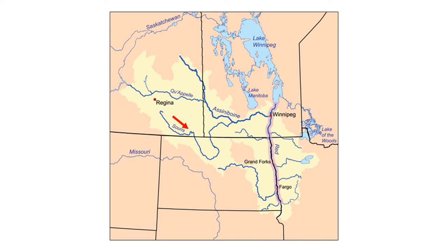An example of a tributary that crosses the border twice is the Souris River. The Souris starts in Saskatchewan, then flows into North Dakota, spending time in the United States, before it curves back north and enters Canada at the Manitoba-North Dakota border. Then the Souris flows into the Assiniboine before eventually entering the main stem of the Red in Winnipeg.